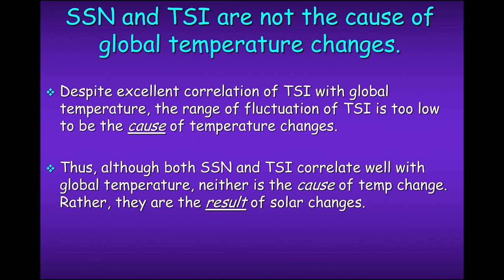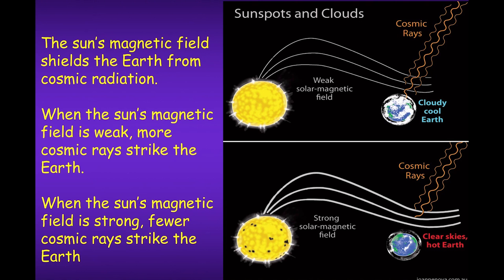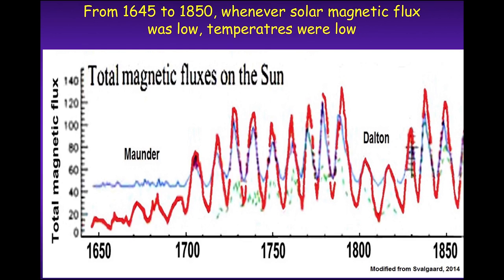Sunspot number and total solar irradiance are related and all drive together. The explanation of this effect is the shielding: a weak solar magnetic field means weak shielding and large input of beryllium-10 and production of C14. So when you measure those isotopes, you measure the strength variation — which is not solar irradiance but solar wind interaction. The stronger the solar wind the more shielding. The Sun's magnetic field shields the Earth from cosmic radiation, and we can measure it with terrestrial parameters. Whenever solar magnetic flux was low, temperature was low — at the Maunder minimum, Dalton minimum, and others.